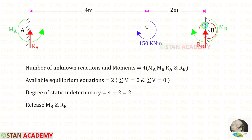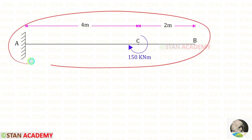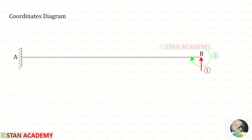From point B, let us release MB and RB so that point B becomes a free end. Now this beam is a cantilever beam. Let us make the coordinates diagram. We will keep RB as the first coordinate and MB as the second coordinate.